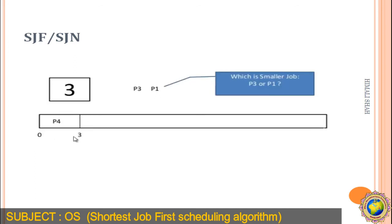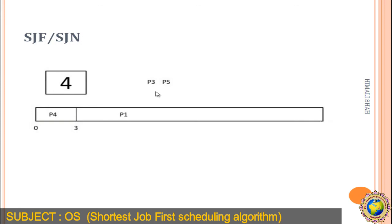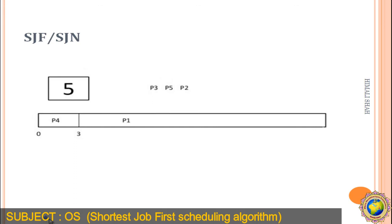Up to time 3, processes P3 and P1 have arrived. We consider the burst time to select which runs next. P3 has burst time 8 and P1 has burst time 6, so P1 is the smallest. P1 is considered to execute next. P1 runs for 6 units, so 3 plus 6 equals 9. P1 finishes at time 9.